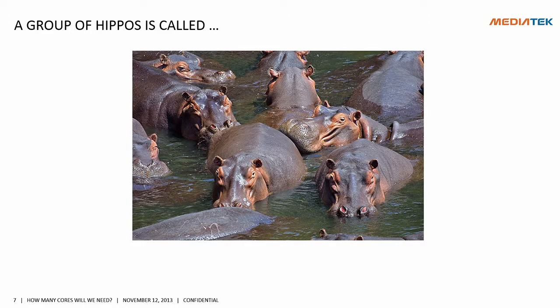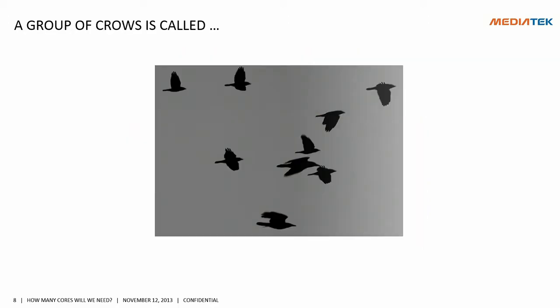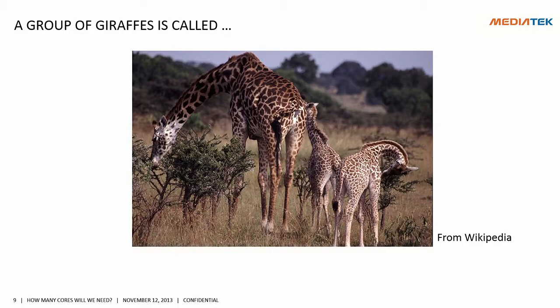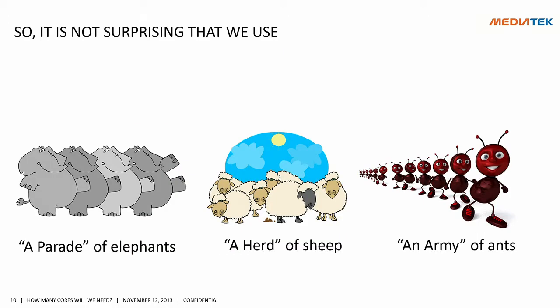So a group of hippos is called a crash. And a group of claws is called something — if you know some novels you probably know about it. Then a group of giraffes is called a tower. This is kind of funny, because what you see actually is a couple of towers here, rather than one tower. So it's not very intuitive.